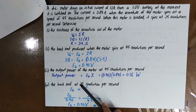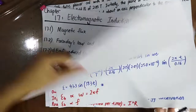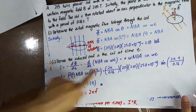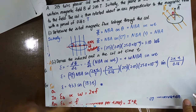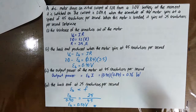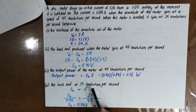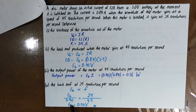Find the back EMF at 25 revs. The back EMF is directly proportional to frequency — the rotations per second of the coil. The faster it spins, the greater the back EMF. So you can calculate the back EMF at 25 revs, which is 0.5 V.